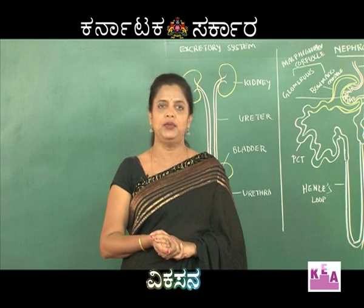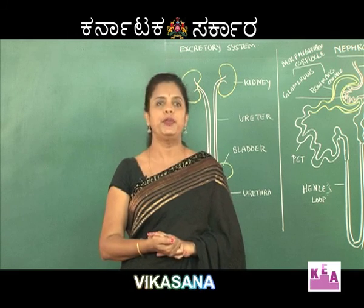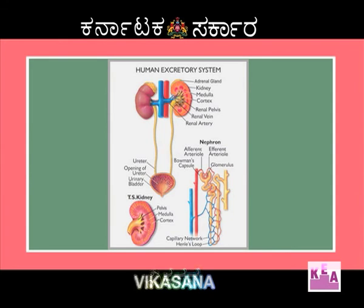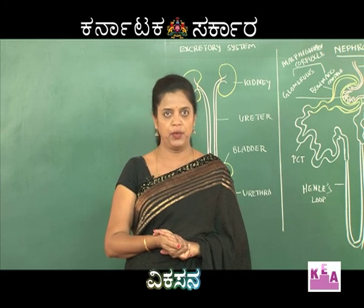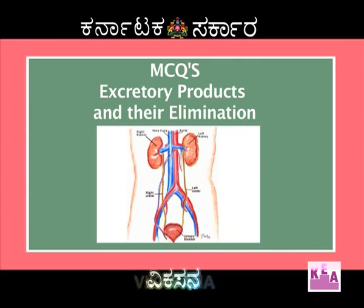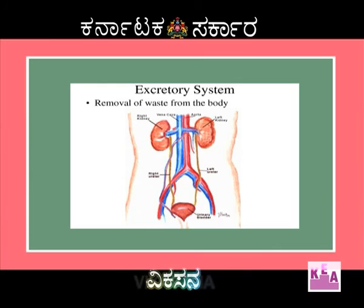Now we are looking at the human excretory system. We'll discuss questions about excretion, and once you understand the structure, you'll be able to identify answers related to collecting tube, glomerulus, and Bowman's capsule. Let me show you the diagram.